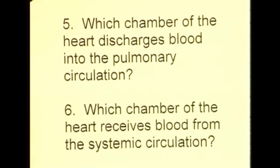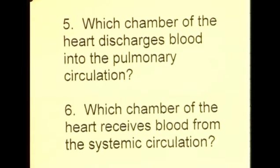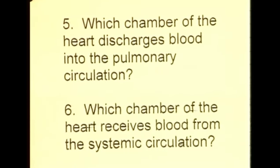Question six: which chamber of the heart receives blood from the systemic circulation? The systemic circulation is the circulation around the body, so the chamber that receives blood from the systemic circulation is the one that receives blood from the inferior and superior vena cava, which is the right atria.